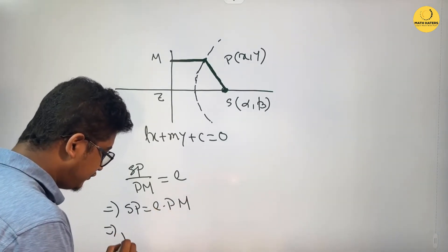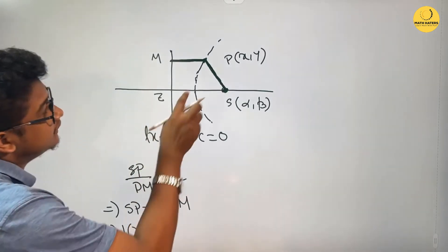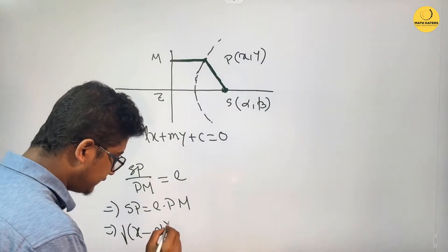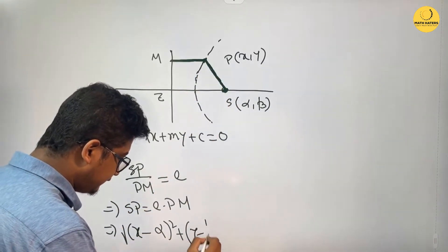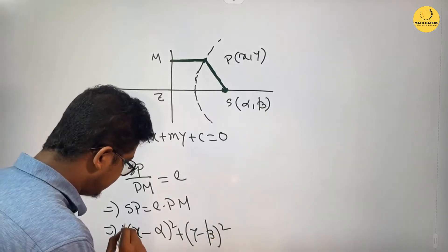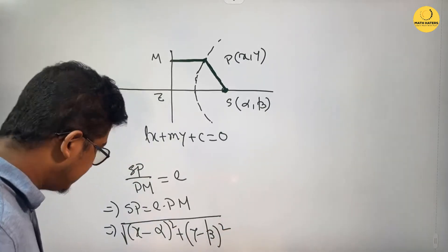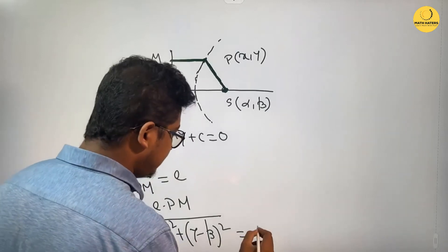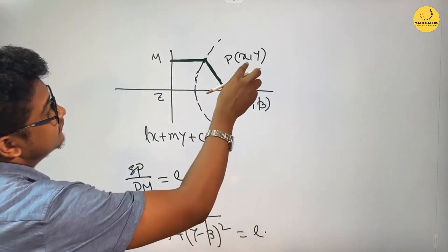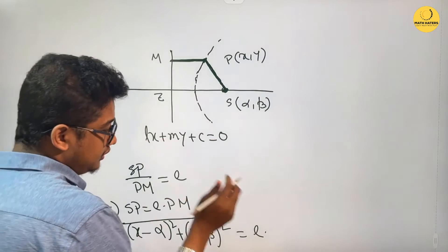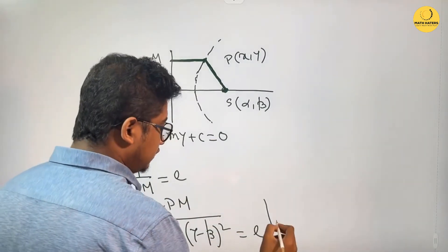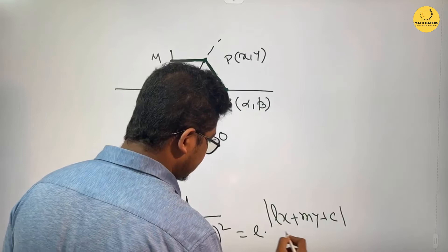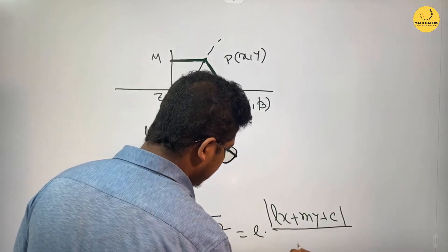SP equals E into PM. SP is the root over of: derivative of (x minus alpha)² plus (y minus beta)². SP equal to PM, E into PM of x, y, plus C divided by root r.